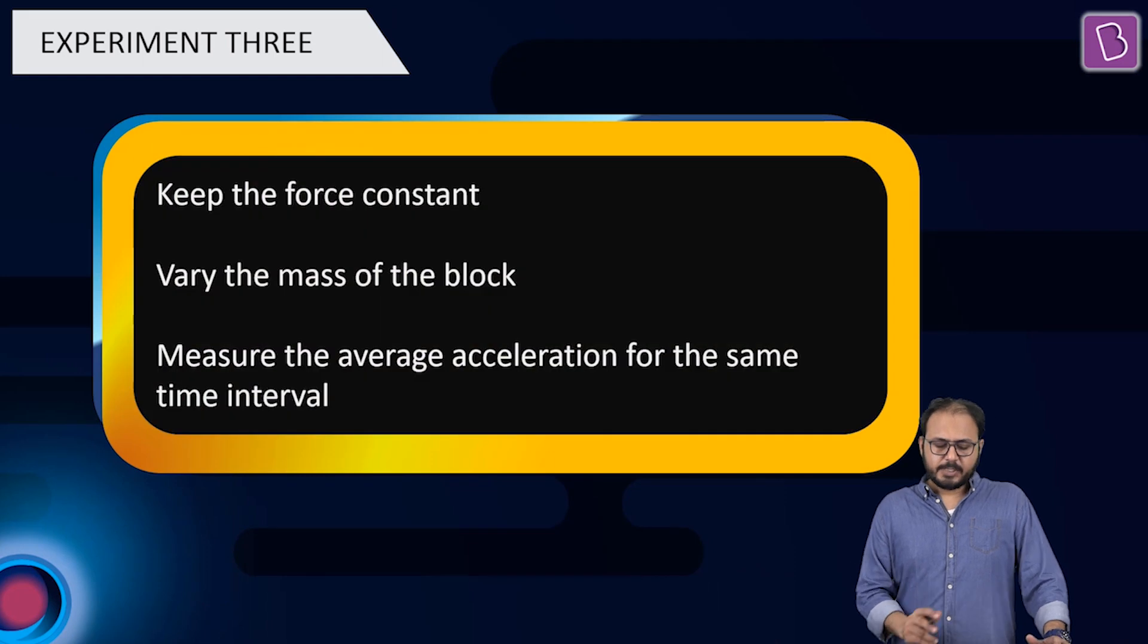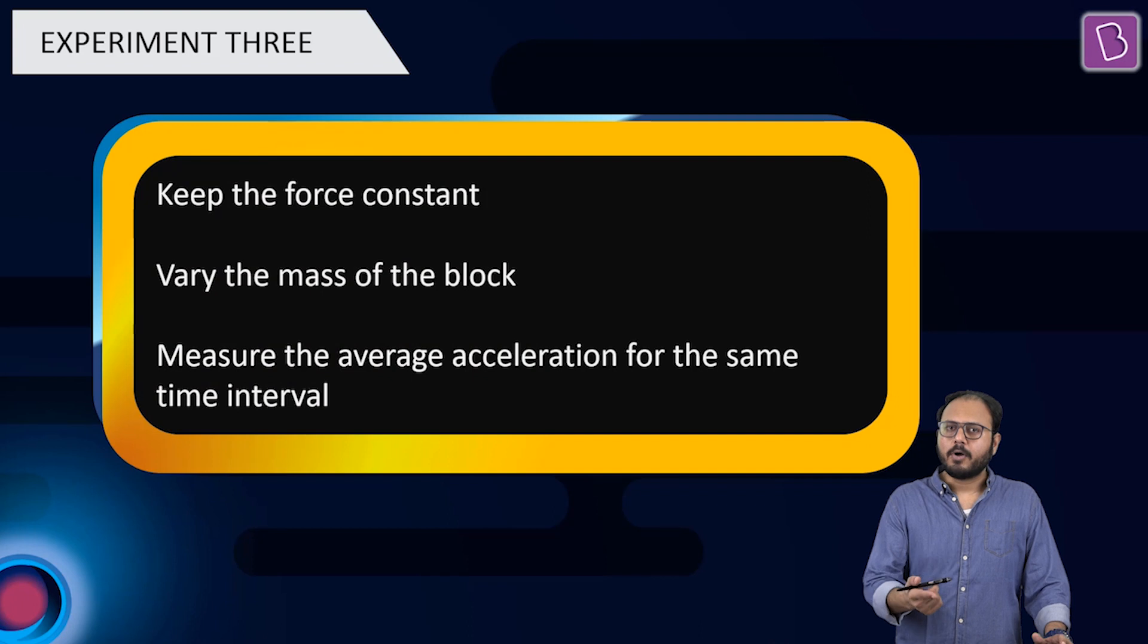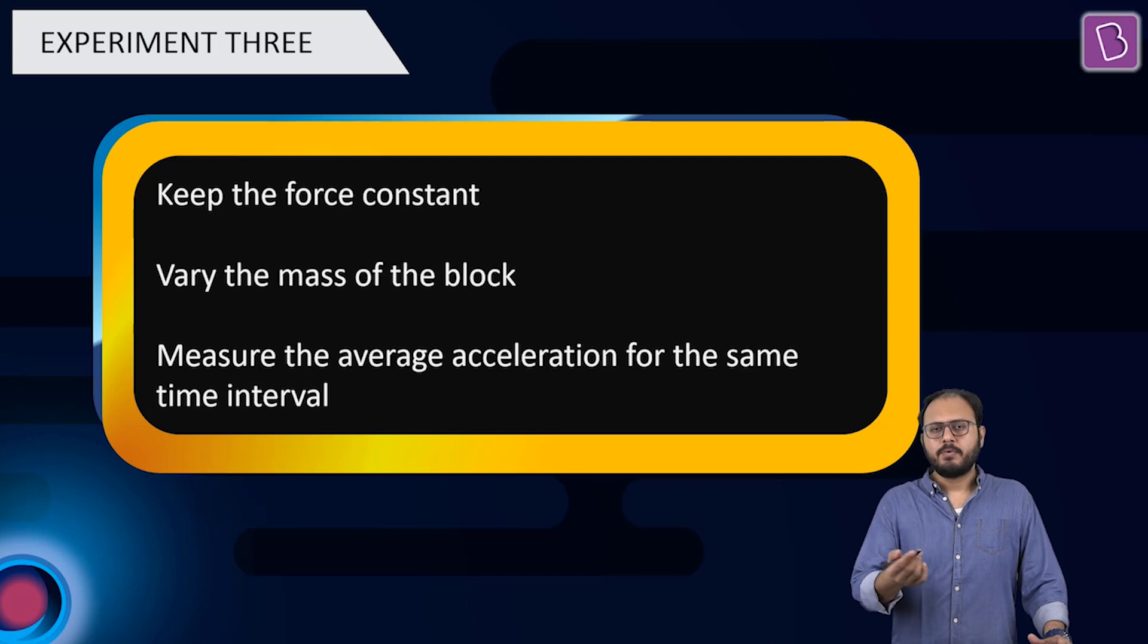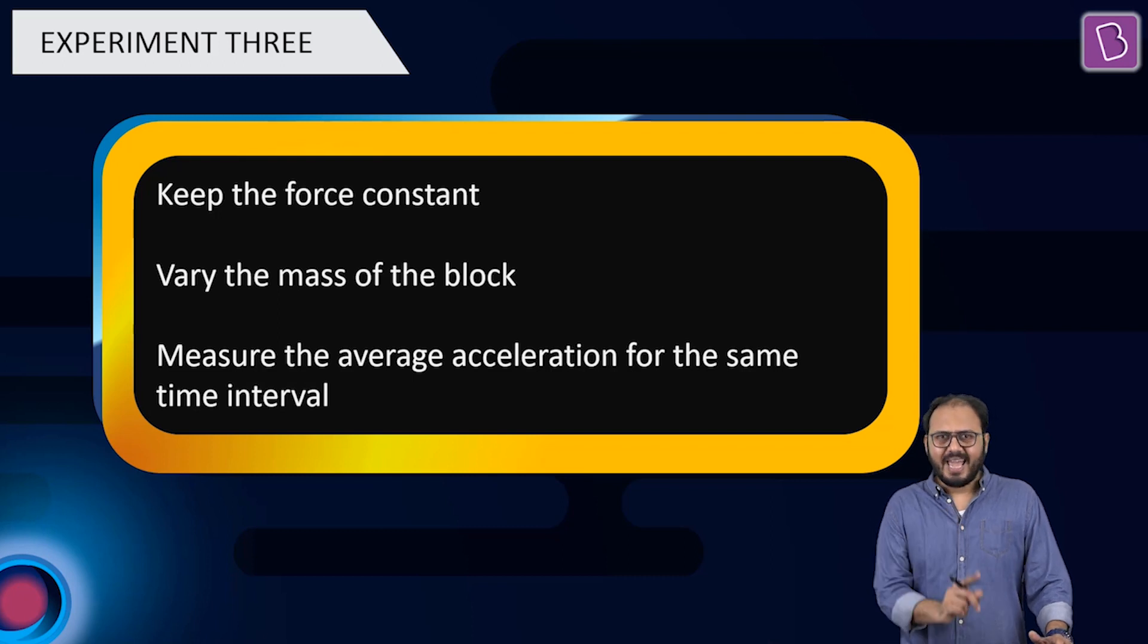Experiment three. Experiment three says, keep the force constant. Change the block. Change the mass. That means, force is f. Mass is m, 2m, 3m, 4m, m by 2, m by 4, m by 8, and so on. And you again, measure the average acceleration for the same time interval.